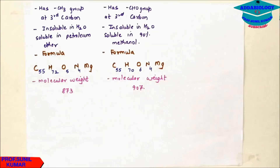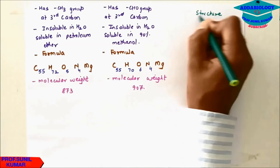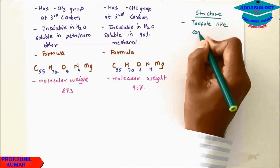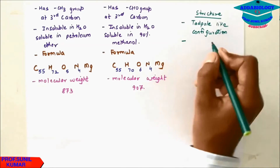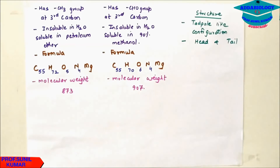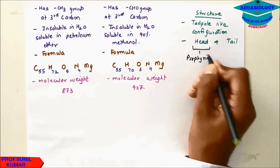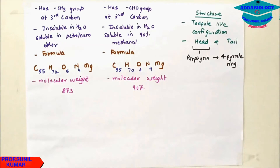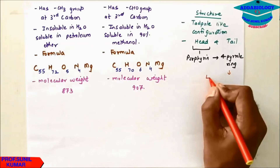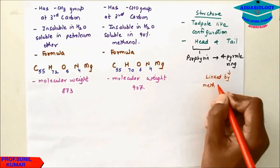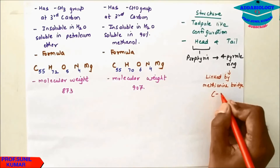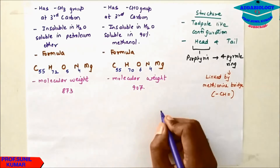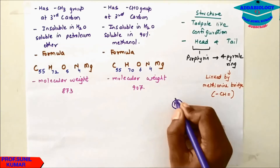The most important part is the structure of chlorophyll. It has a tadpole-like or kite-shape configuration, consisting of a head and a tail. The head is called the porphyrin head, which has four pyrrole rings — a tetrapyrrole structure. All pyrrole rings are linked by a methine bridge, that is CH double bond. The most important element, magnesium, sits in the center in non-ionic form.